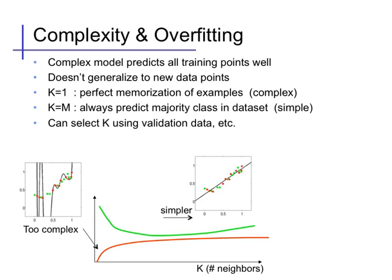This is an example of the complexity and overfitting tradeoff that we discussed in the introduction. In particular, a very complex model might be able to predict all of the training points well, but may not generalize very well to new data points. Here we see that effect where at k equals 1, we can perfectly memorize all of the training examples. And our decision function is very complex. It carves out a region of a particular color around every single data point.